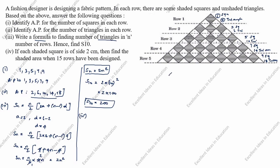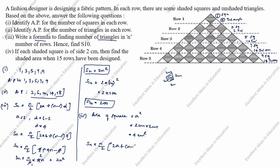Fourth question: if each shaded square has a side of 2 cm, the area of each square = A² = 2 × 2 = 4 cm². Now find the total shaded area when 15 rows have been designed. Using S_N = N/2 × (2A + (N−1)D) for the squares AP: A = 1, D = 3 − 1 = 2.